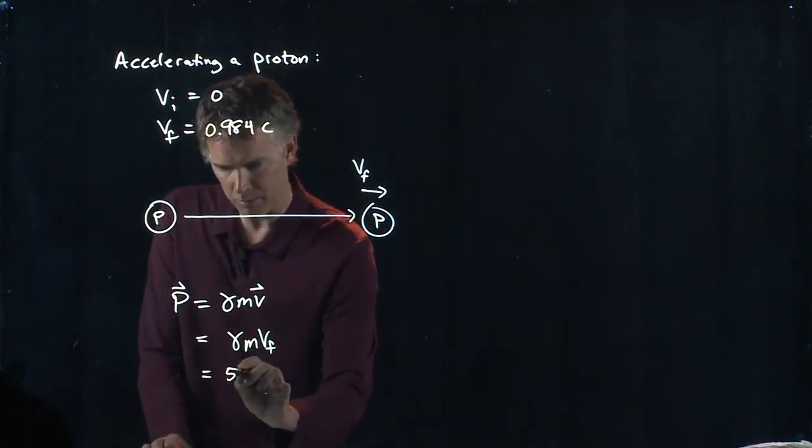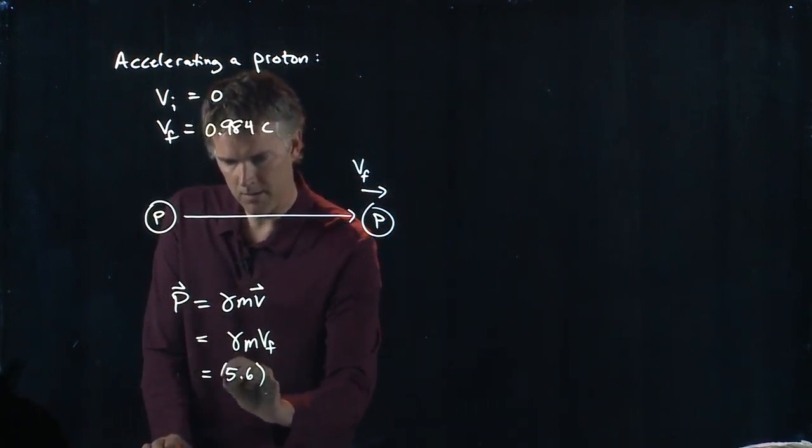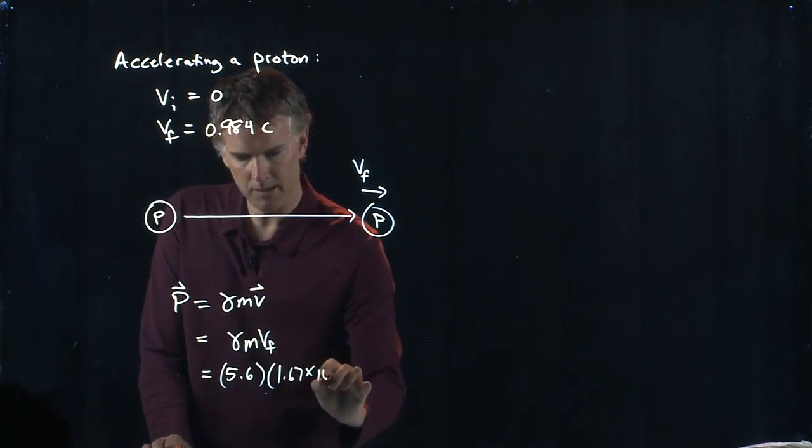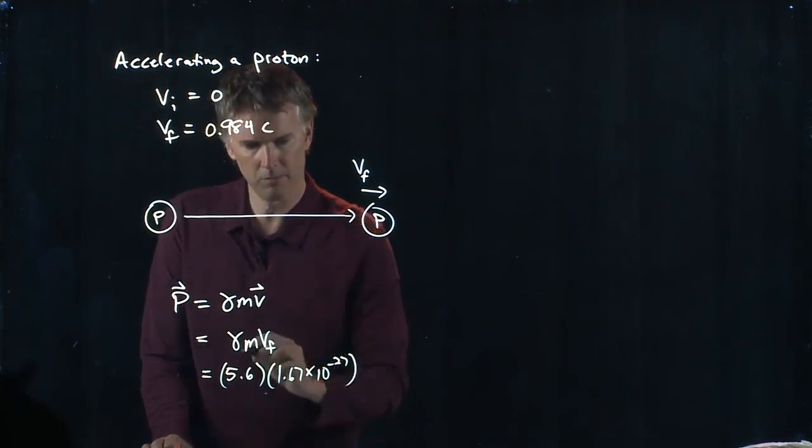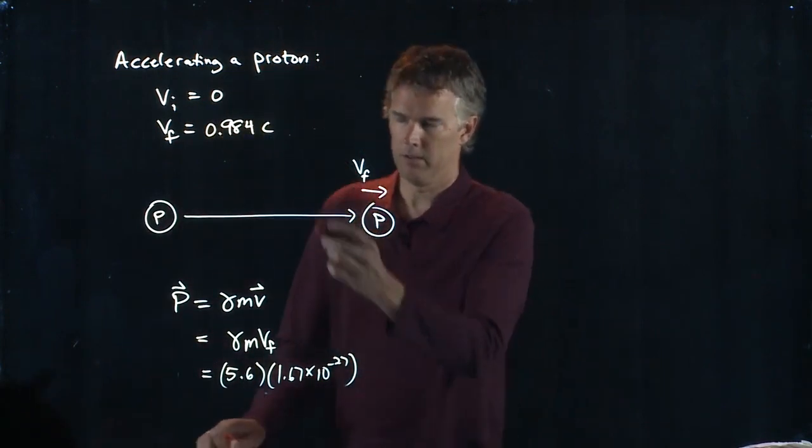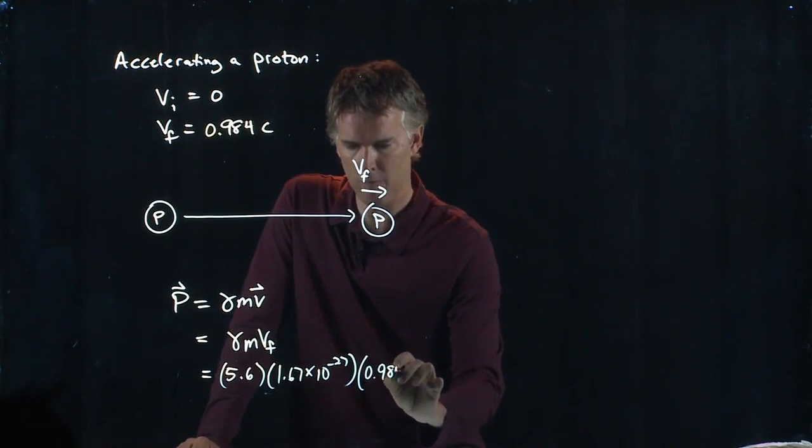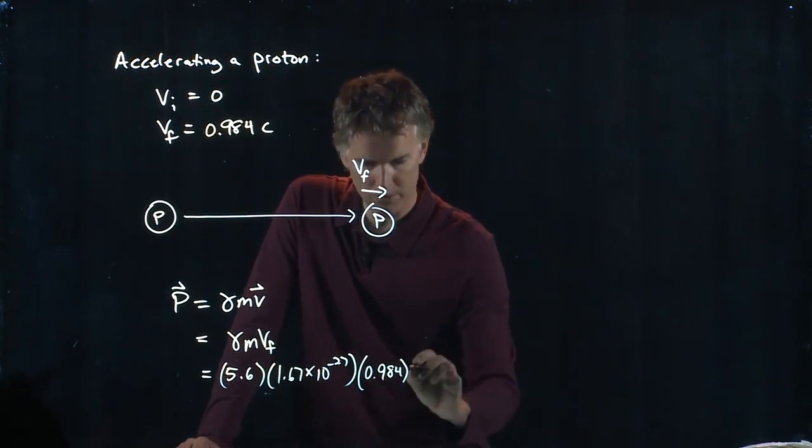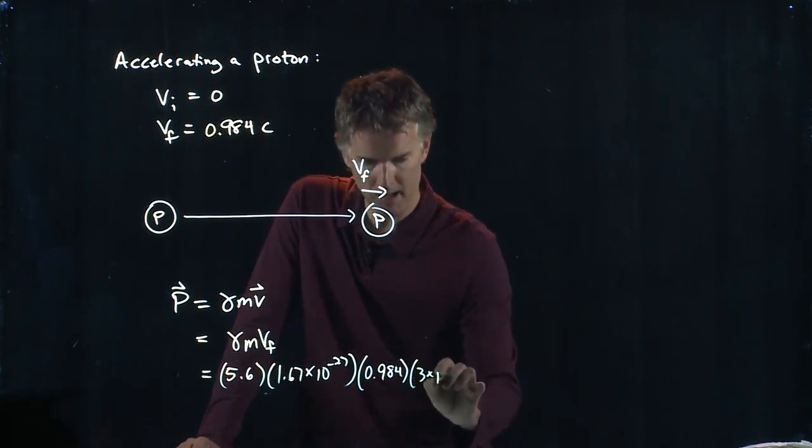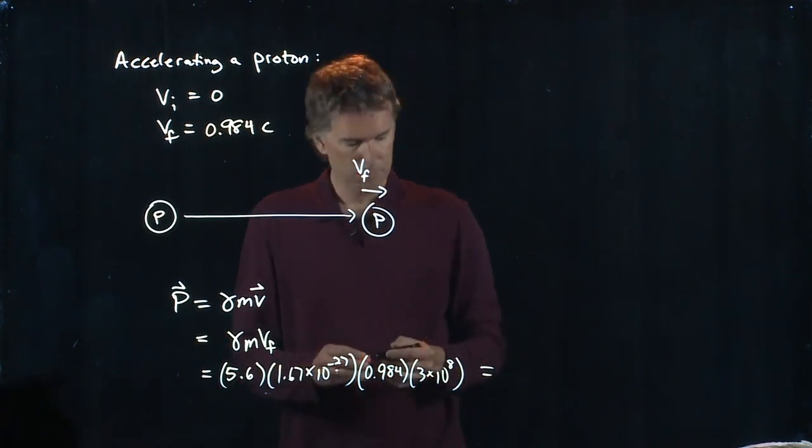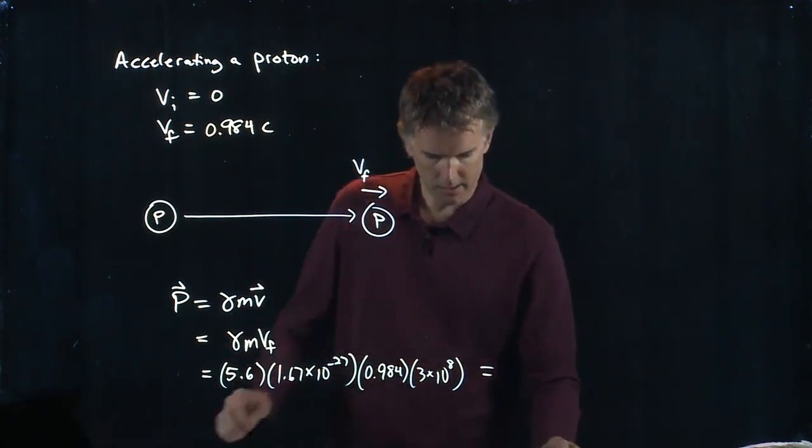And for our numbers, we already know what gamma is. Gamma was 5.6. Mass of the proton, 1.67 times 10 to the minus 27 kilograms. V final is right there, 0.984C, which is 3 times 10 to the 8. All right. Punch all those numbers into your calculator and let's see what we get.